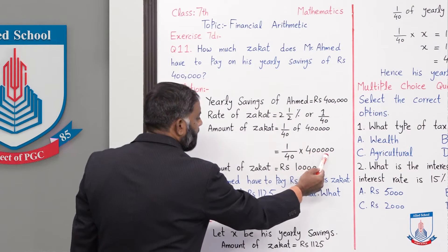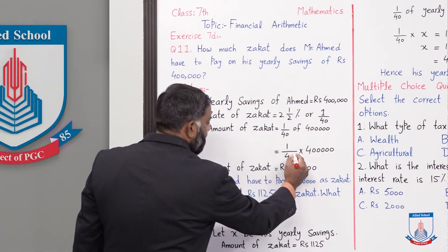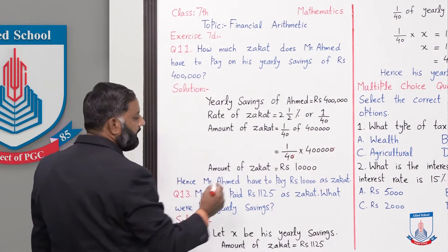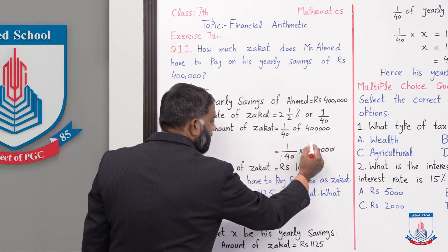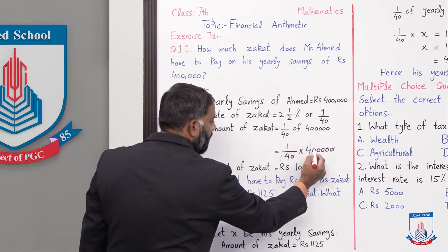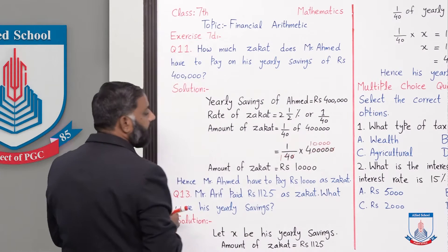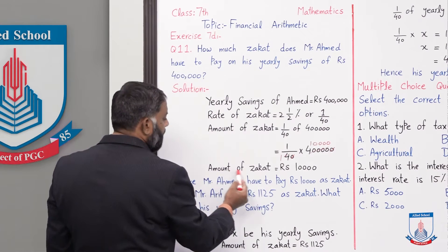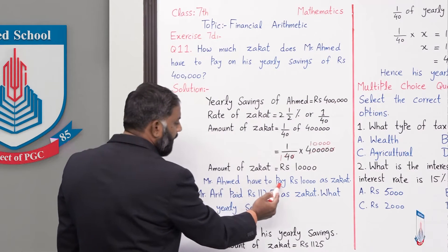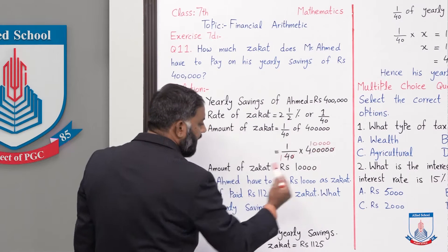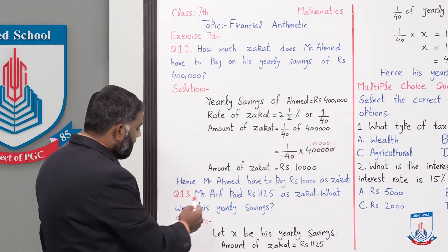1/40 into 400,000. Ab iski cutting kar deynge — zeros cancel ho jayenge. Four ones are four, aur four ke saath cutting ho jayegi, to 10,000 aajayenge. Hence, Mr. Ehmad have to pay rupees ten thousand as zakat.